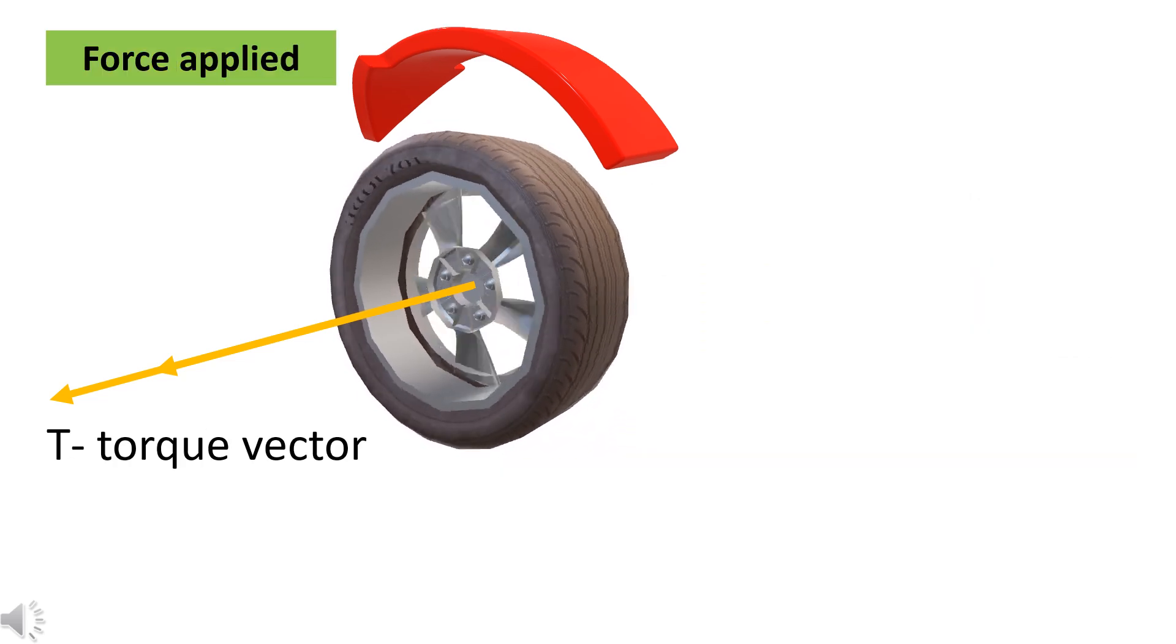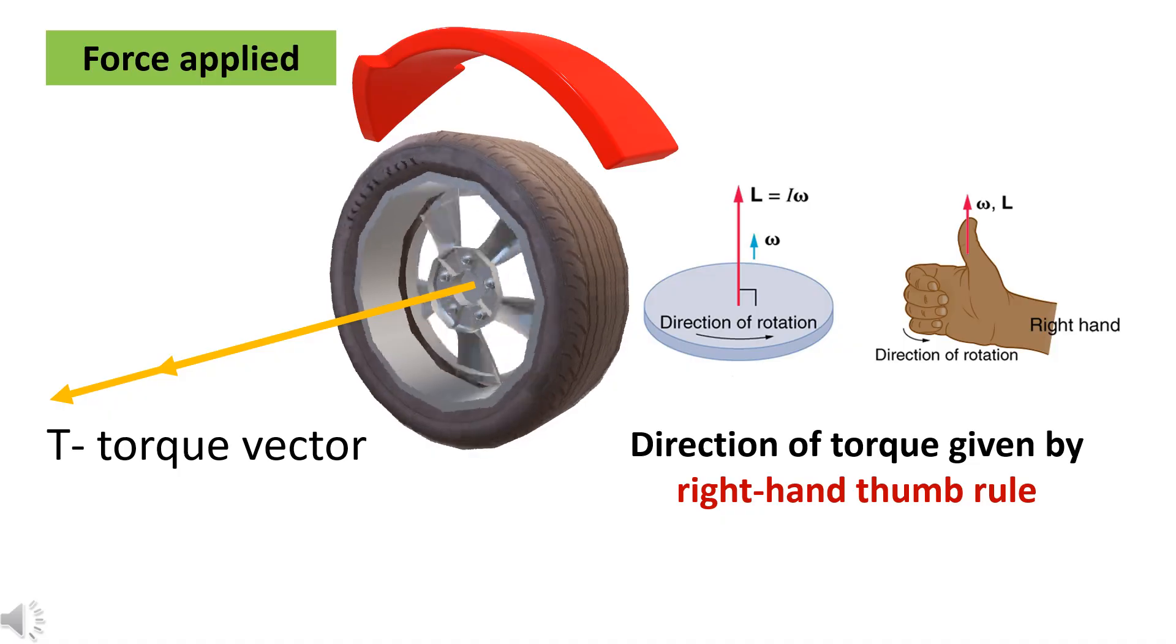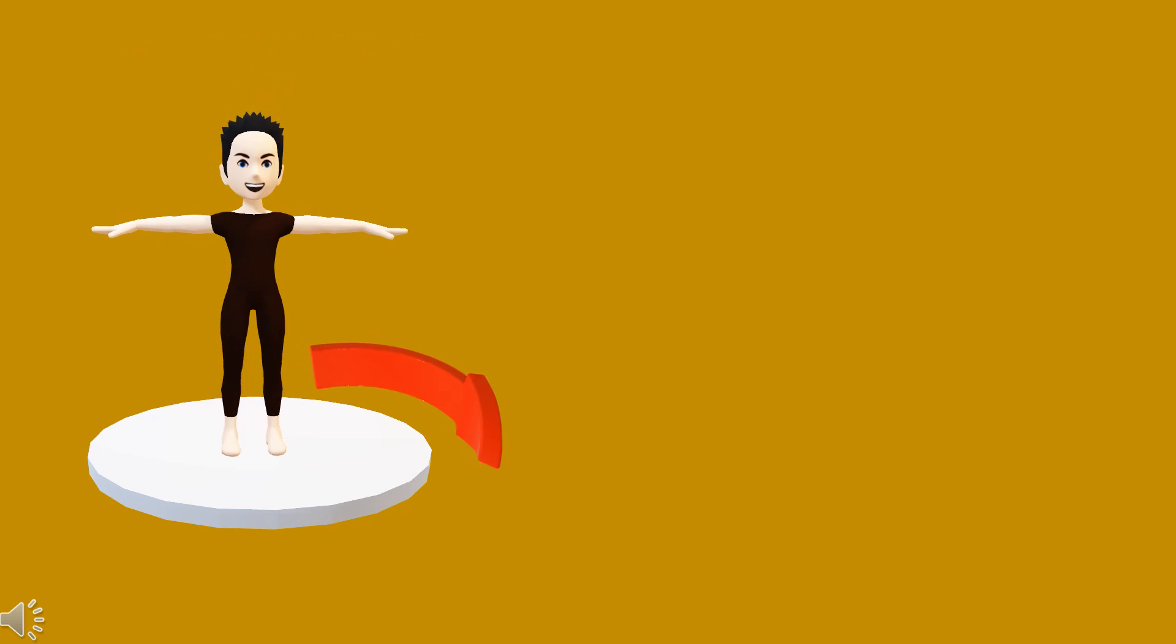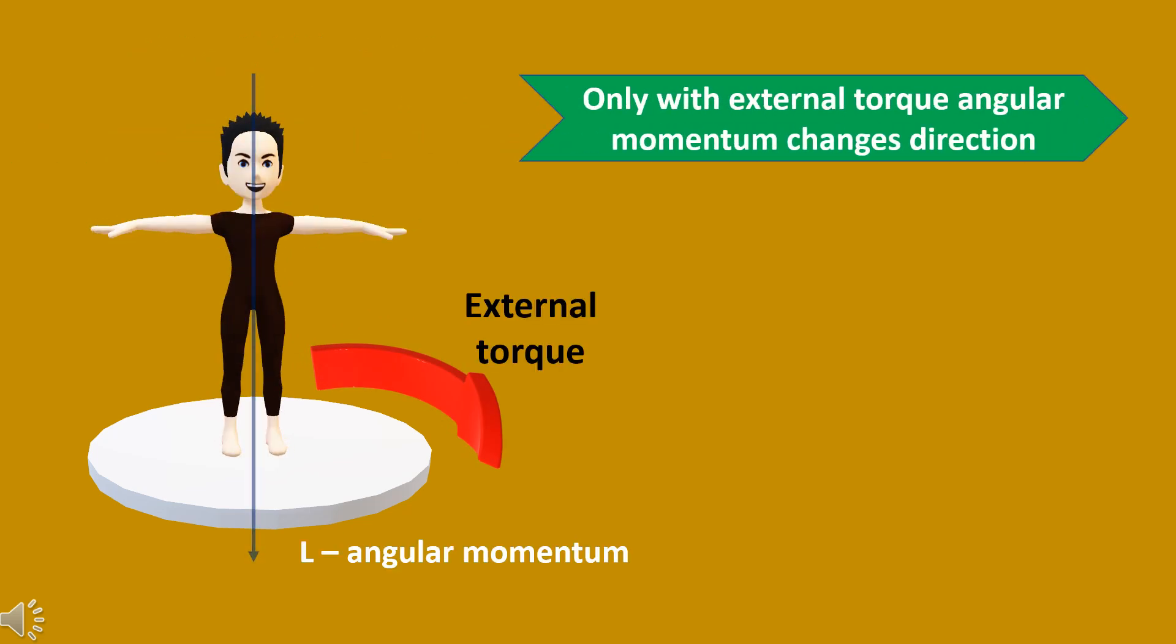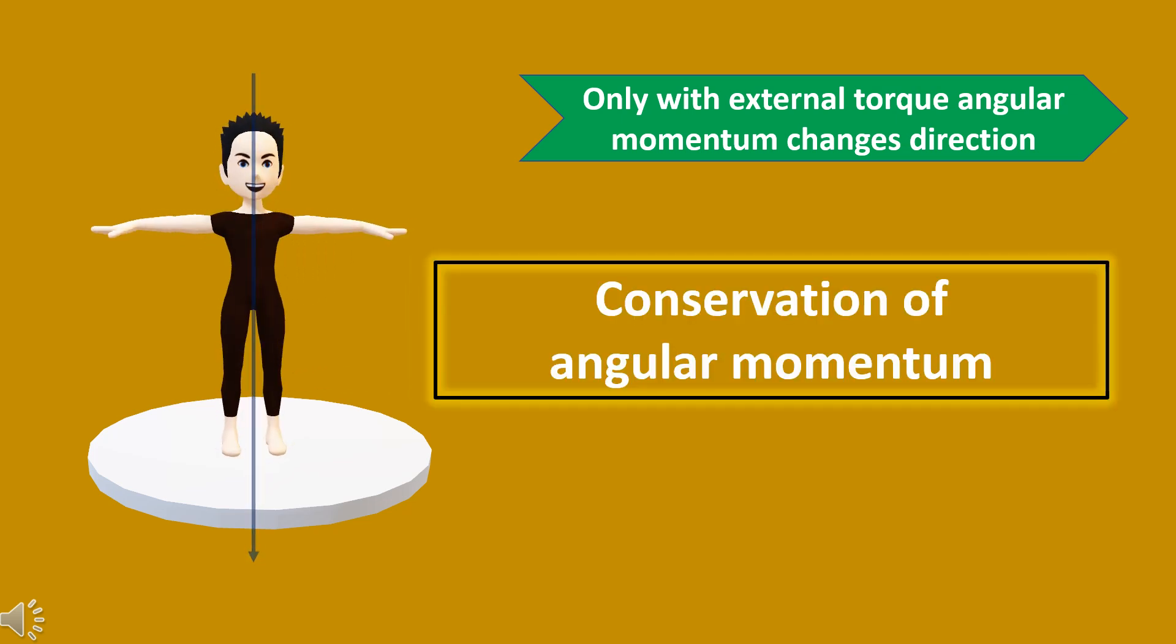The right-hand thumb rule can also be applied to find the direction of the torque which is applied on a spinning body. Angular momentum has an interesting property. The direction of the angular momentum can be changed only by applying an external torque to the spinning body. This is based on Newton's law.